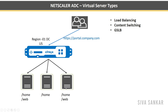We have three servers — server one, server two, and server three — and each server has two directories running on it: slash home and slash web. The second server only has home. The website portal.company.com is running on all three servers to provide redundancy. What we generally do is load balance the traffic, so whenever user requests come to portal.company.com, NetScaler will load balance the traffic across all three servers.